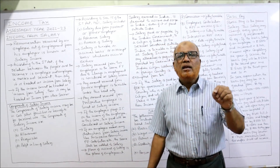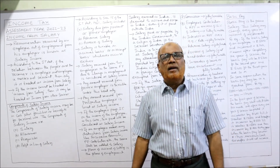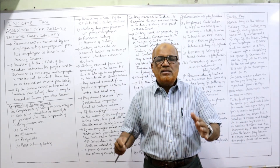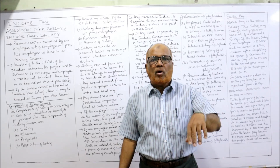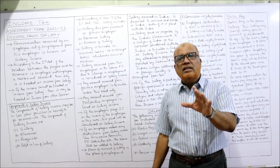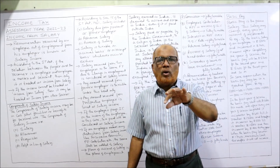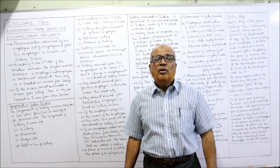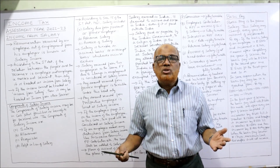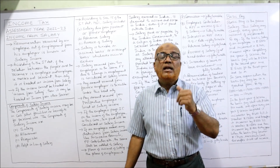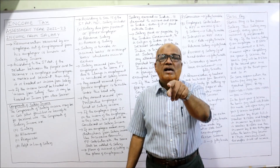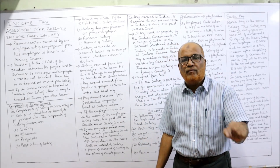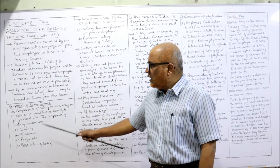A simple example: the salary paid to MPs — Members of Parliament — or MLAs. Salary received by MPs and MLAs is from the government. But is there a relationship of employer and employee between the government and an MP? No. There is no employer-employee relationship. But still they are getting the salary, so that salary is not taxable under salary income. It is taxable under income from other sources.